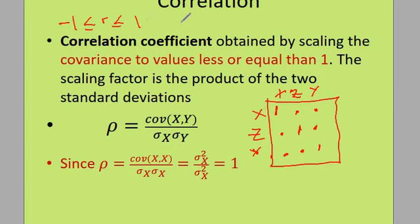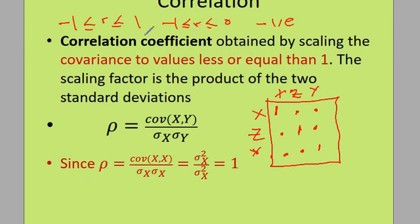If you get a correlation ranging from minus one to zero, this is called a negative correlation, meaning that as one variable increases, the other is decreasing. When the correlation ranges from zero to one, we call this a positive correlation.